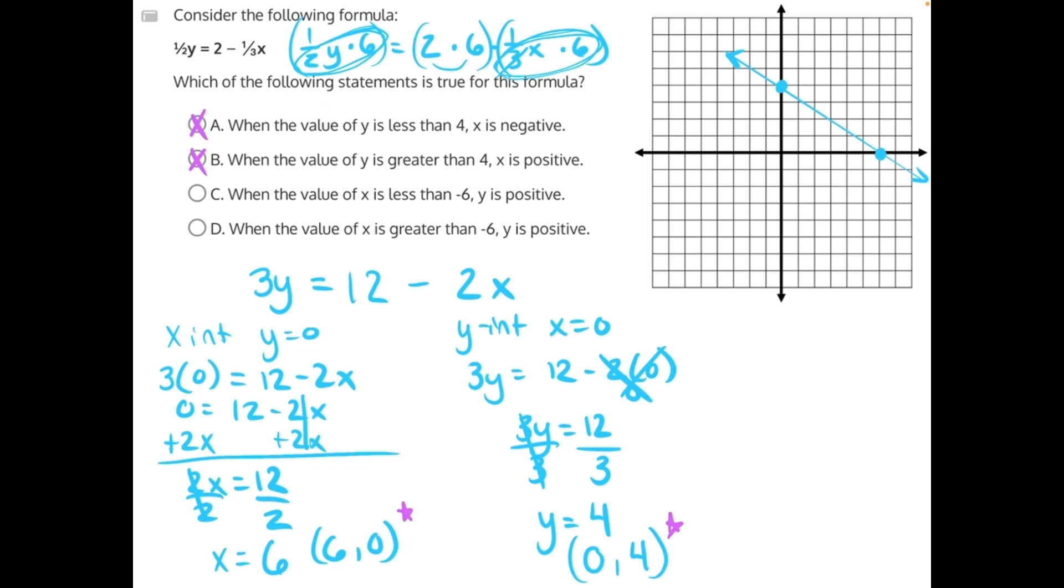C says when the value of x is less than negative 6, 1, 2, 3, 4, 5, 6, then y is positive. Well, let's estimate, let's say that would be right about here on the graph if it continued out this way.